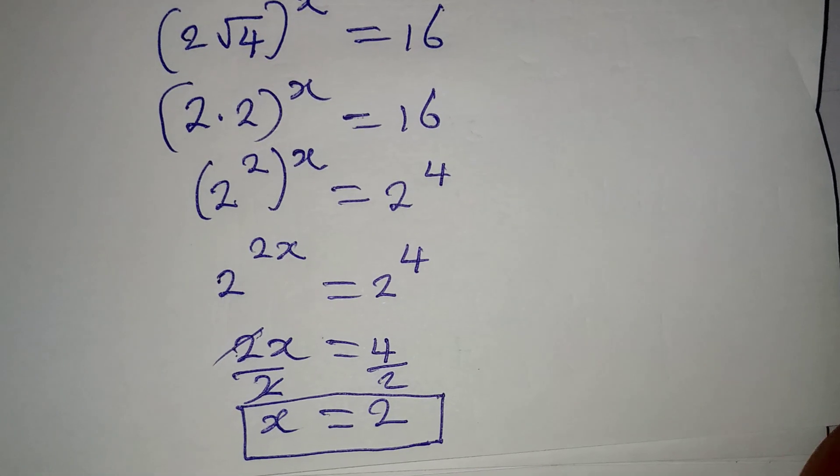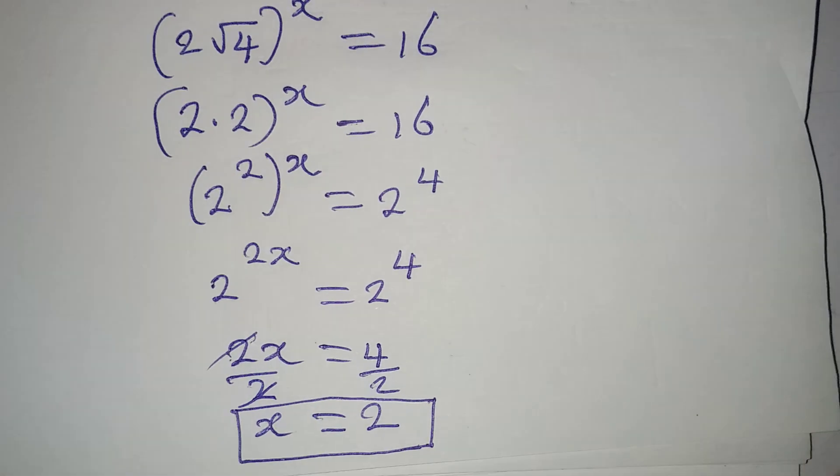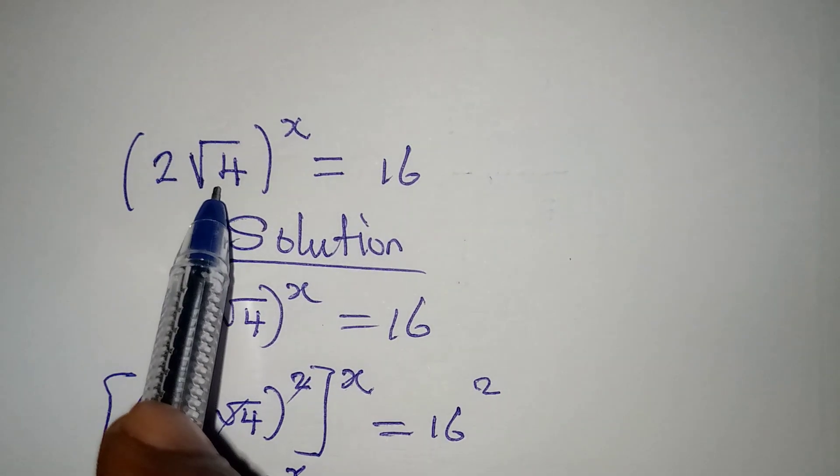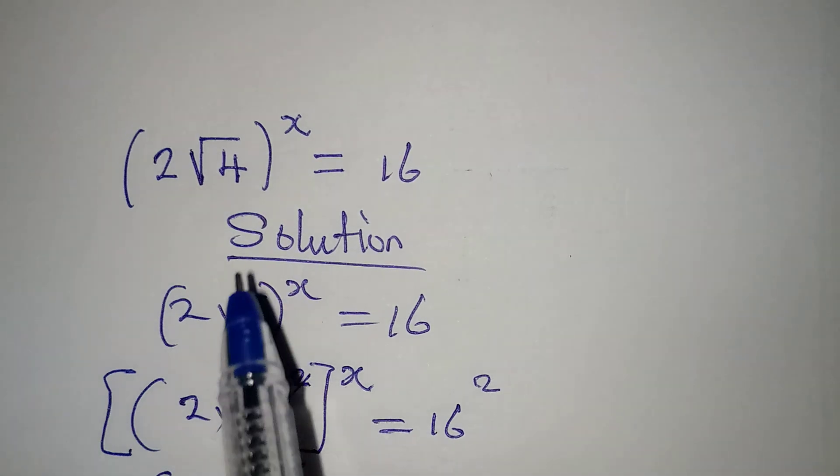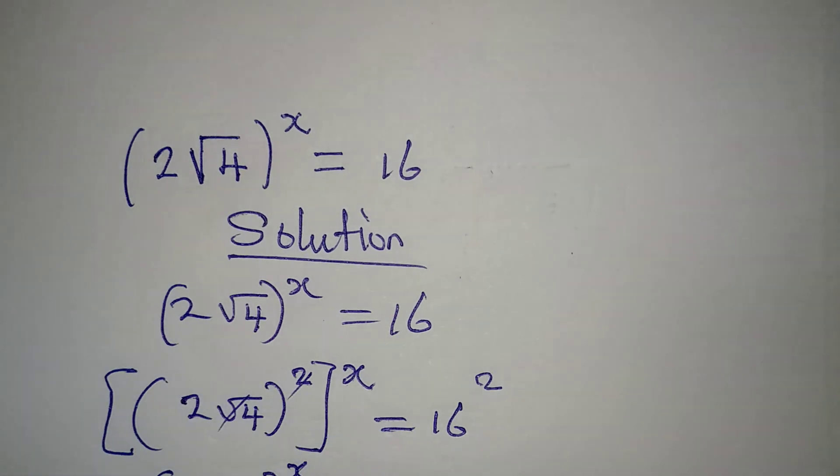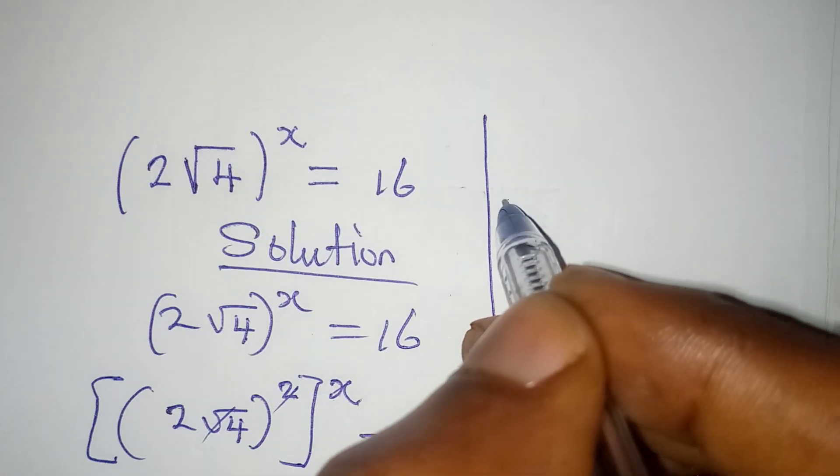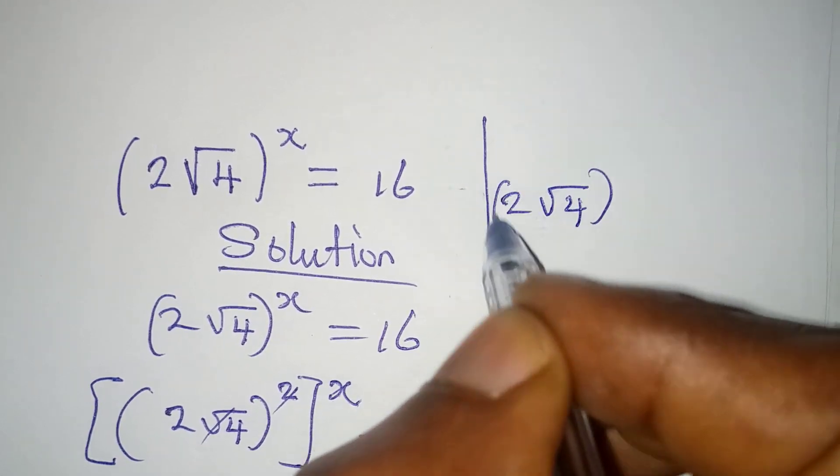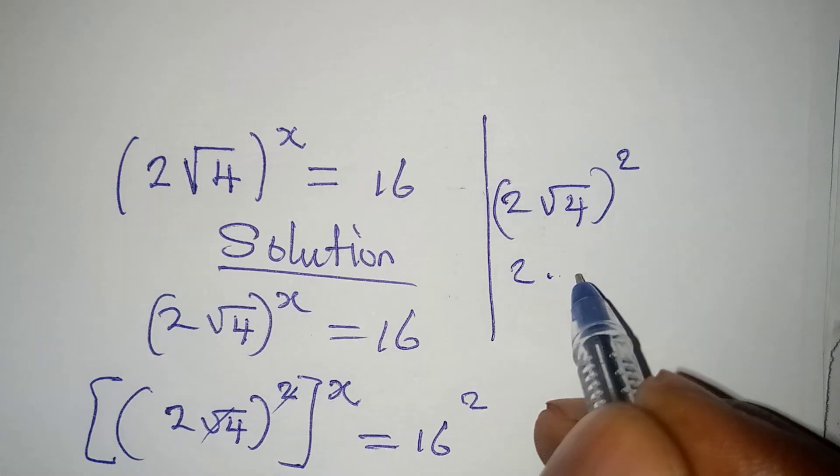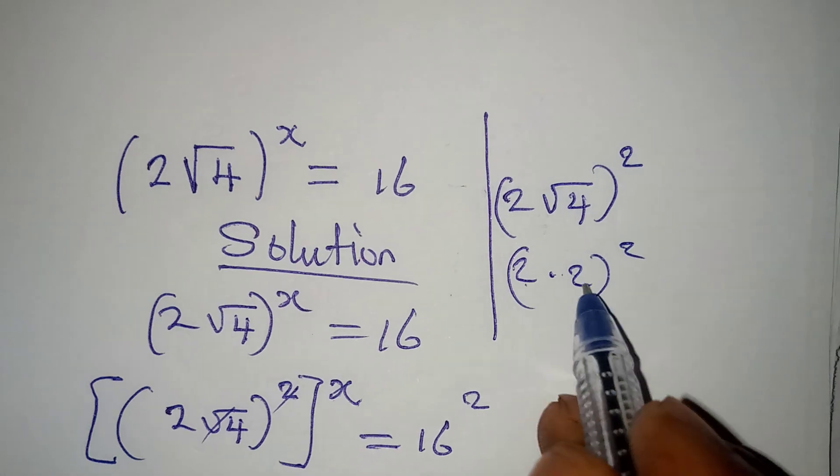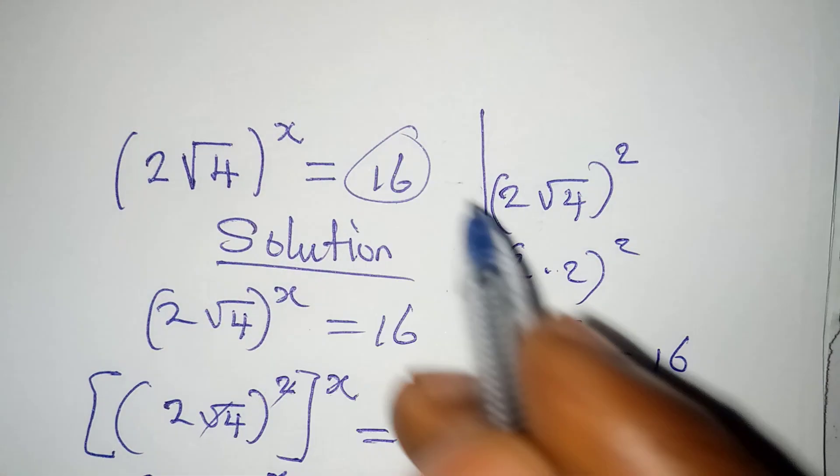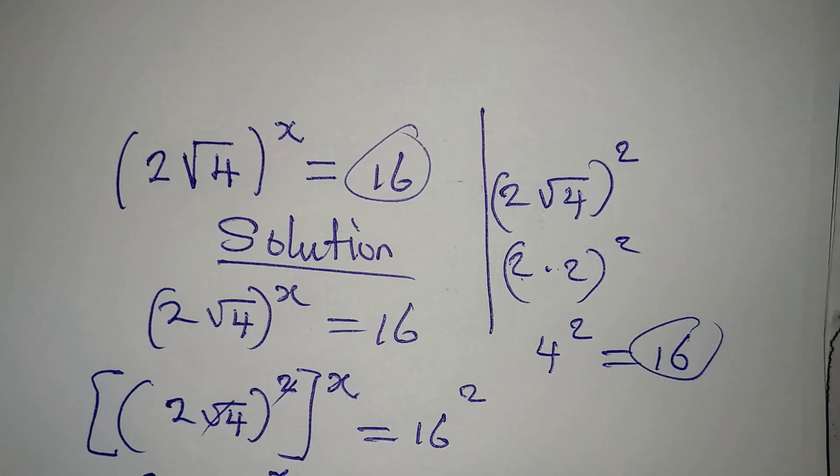Let's go back to the original equation and confirm if the left-hand side will give us 16. The original equation is (2√4)^x = 16, but in place of x I'm going to write 2. We have (2√4)^2. Will this give us 16? The answer is yes, because this is 2 times 2 to the power of 2. 2 times 2 is 4, then 4 squared gives us 16, and that is what we had on the right-hand side. Thank you for watching.